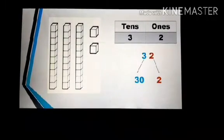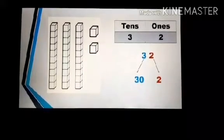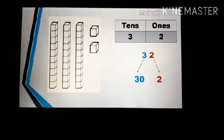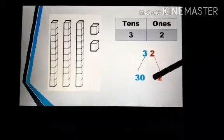Look at next example which is 32. 32 means three rods of 10s and two 1s. The value of 2 is 2 and the value of 3 is 30.